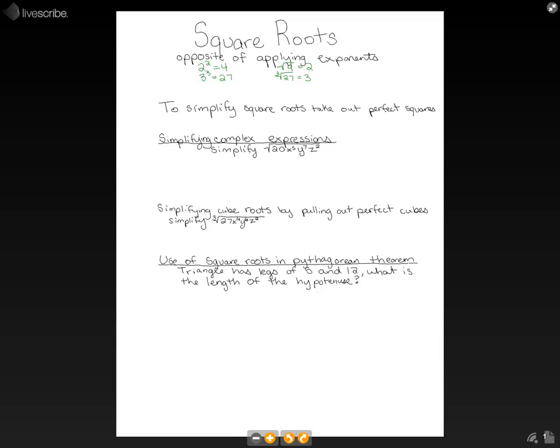So to simplify square roots, we're going to take out perfect squares. So if we have the square root of four, we could also write that as a square root of two squared. And two squared is a perfect square, so that's just going to equal two because the squared and the square root cancel.